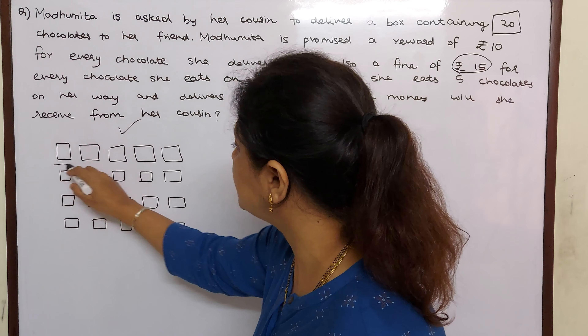So let us work out how much money she is going to get. Number of chocolates she has delivered: out of 20 chocolates, she has eaten 5, so she can only give 15 chocolates to her cousin's friend. Number of chocolates delivered is equal to 15, and number of chocolates Madhumita ate is equal to 5. So we have distributed all 20 chocolates — delivered and eaten.